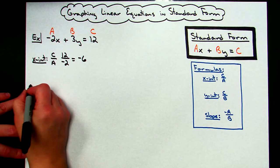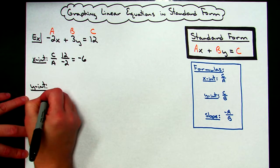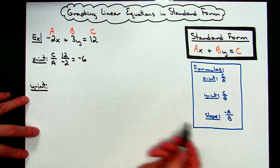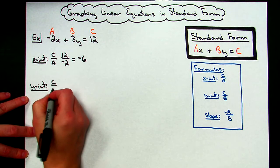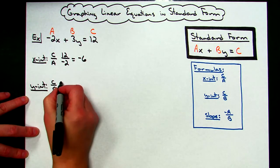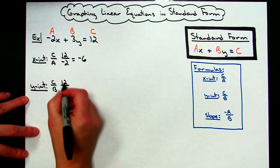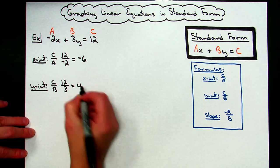Let's go through and find the Y-intercept. The formula for the Y-intercept is C over B. My C value is 12, my B value is 3, 12 divided by 3 is a 4. So both those turned out to be whole numbers.